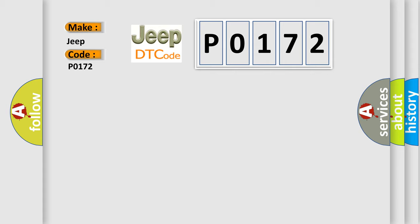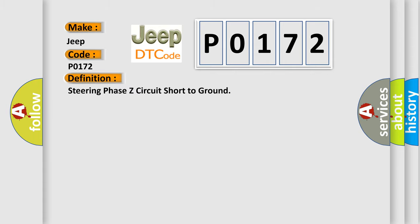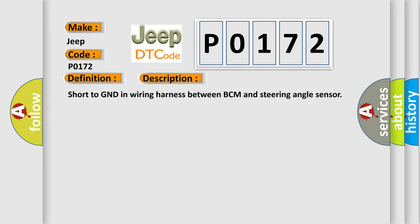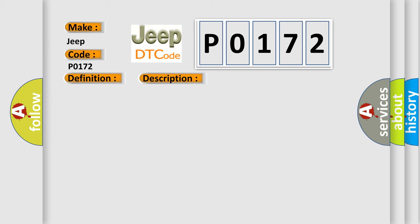The basic definition is: Steering Phase Z circuit short to ground. This is a short description of this DTC code: short to GND in wiring harness between BCM and steering angle sensor. This diagnostic error occurs most often in the following cases.